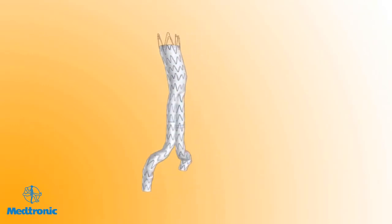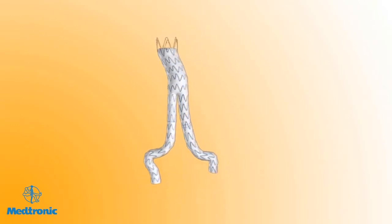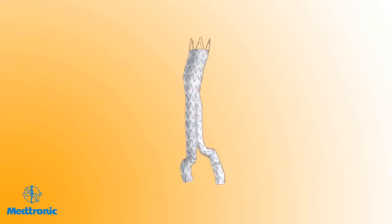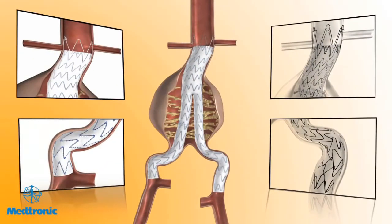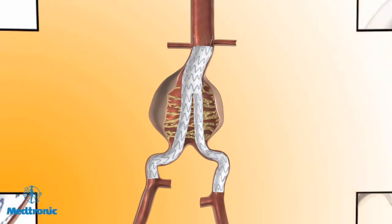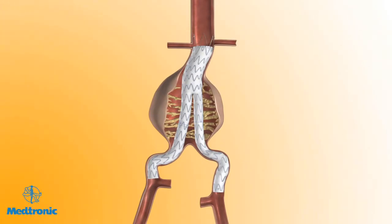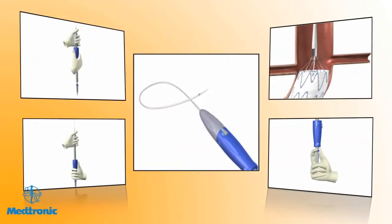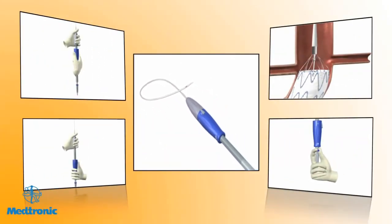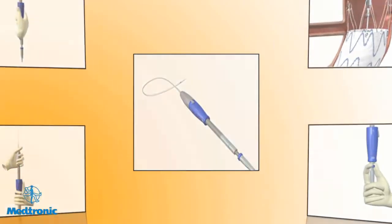The Endurant StentGraft system has been specifically designed to perform in patients with challenging anatomies, such as those with short or angulated infrarenal aortic necks and tortuous or small iliac arteries. The Endurant Delivery system is based on the easy-to-use Accelerant Delivery system with an added tip release mechanism.